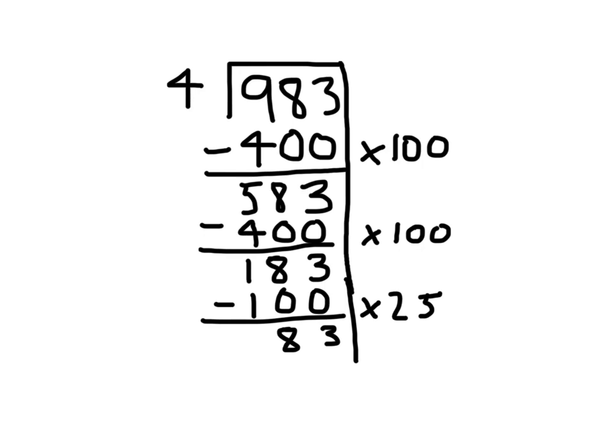I know that another number I could try that will get me really close is 20. But you can try any number here. There's really no wrong numbers that you can write on the right-hand side. If you choose a number that's too high, then simply erase it and try a different one. I know 4 times 20 is 80. I'm going to subtract that off, and that leaves me with 3. I can't go any further, because 4 does not fit into 3. There's no number I can multiply by 4 to get to 3.